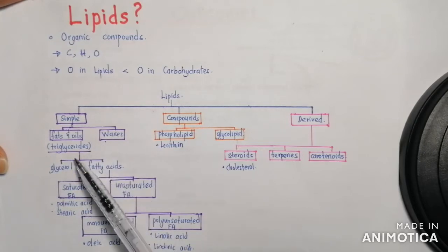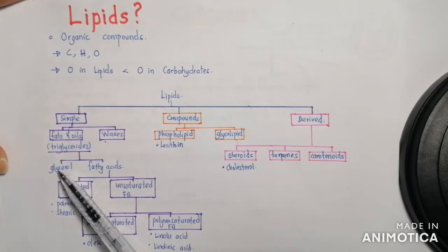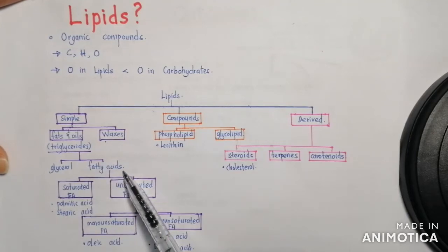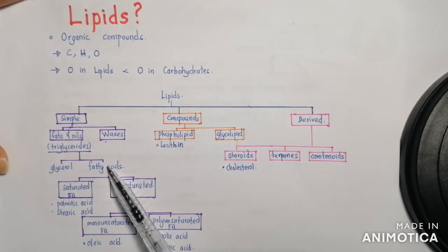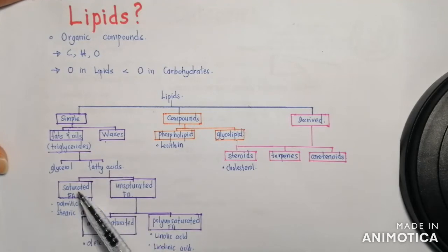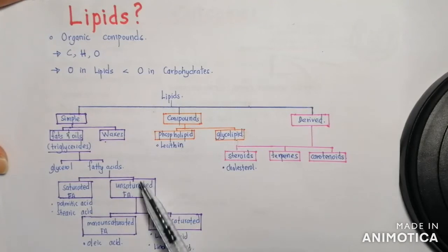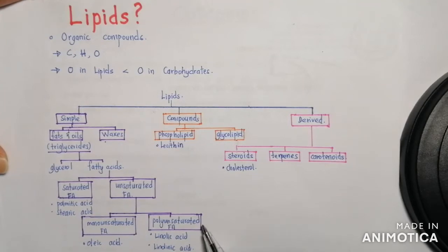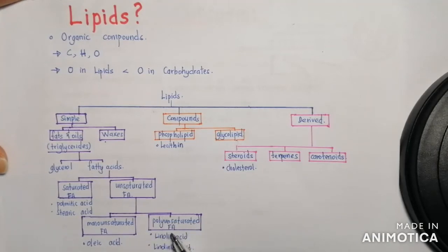Triglycerides are made up of glycerol, which is an alcohol, and fatty acids. In fatty acids, we have saturated fatty acids — examples are palmitic acid and stearic acid — and unsaturated fatty acids, which include monounsaturated fatty acids and polyunsaturated fatty acids. Examples of monounsaturated fatty acids include oleic acid, and for polyunsaturated fatty acids, linoleic acid.